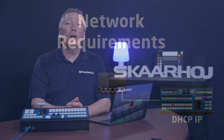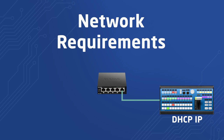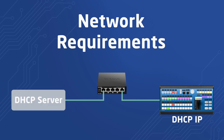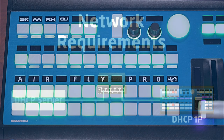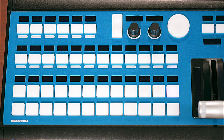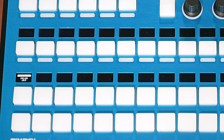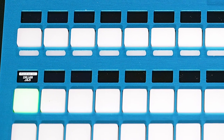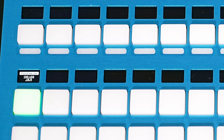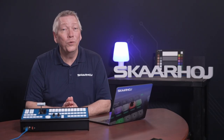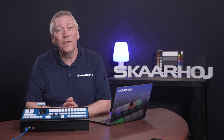Bluepill products are network-based and leave the factory with IP set to DHCP. For this reason we recommend you have a DHCP server for initial setup. If you have a DHCP server in your network, you'll see an IP address in the display after boot up. This is the address you use to access the device.